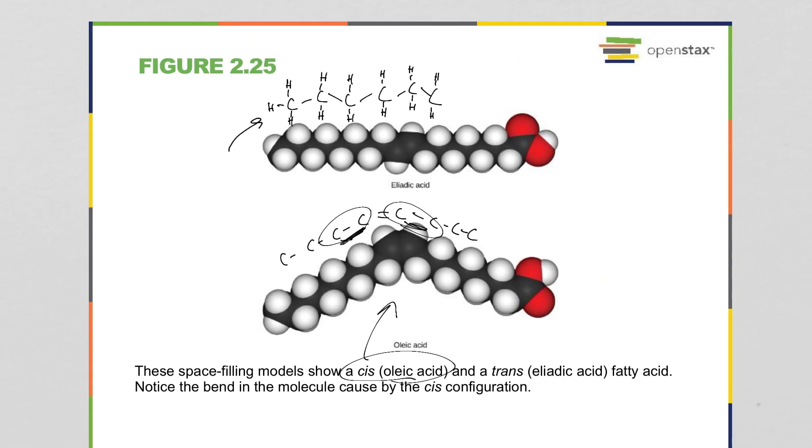If it was all trans, right, it will look like this where the chain is straight. And so this makes a difference for the physiology of membranes. It makes a difference for which enzymes can recognize that molecule, right? And so pay close attention to this when you get to membrane physiology, right? Because they have different properties depending on whether you put the cis or the trans version of a fatty acid in that membrane.